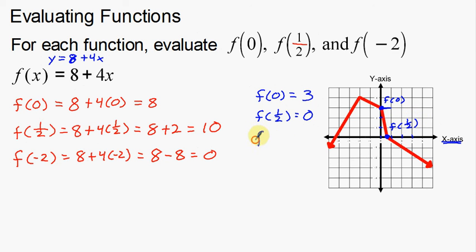Last but not least, we have f of negative two. We're plugging in an x of negative two — going over here to negative one, negative two. This is negative two right here. Now I have to go up to find where the graph is. f of negative two is right here at this point, which counts up to one, two, three, four — a y-coordinate of four.